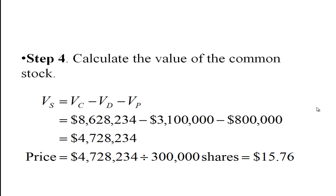If we want to calculate the value of the common stock, the value of the stock is going to be the value of the company minus the value of the debt minus the value of the preferred stock. So it's $8,628,234 minus the $3,100,000 market value of the debt minus the $800,000 market value of the preferred stock, giving us $4,728,234 as the market value of the common stock. If we want the price per share, we take this market value of the stock and divide it by the number of shares outstanding, 300,000, and we get $15.76.